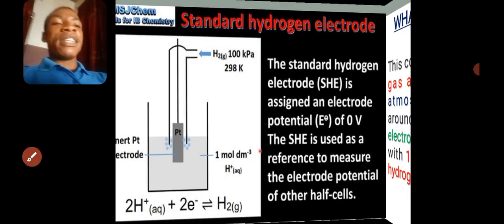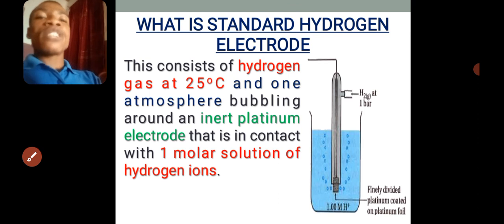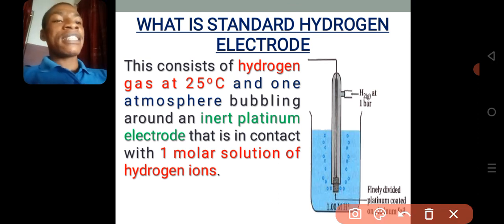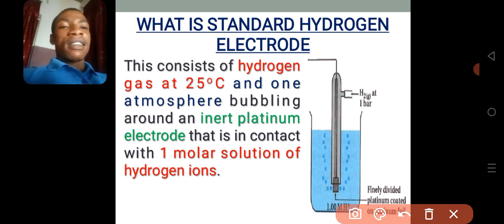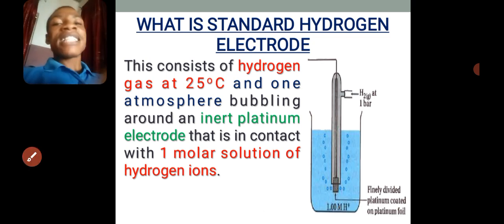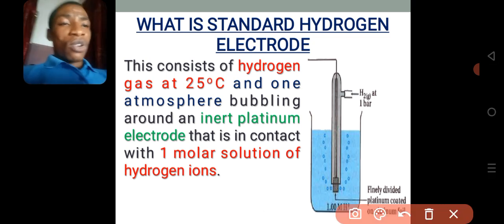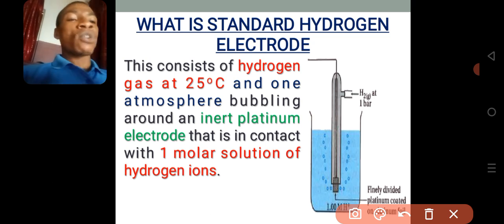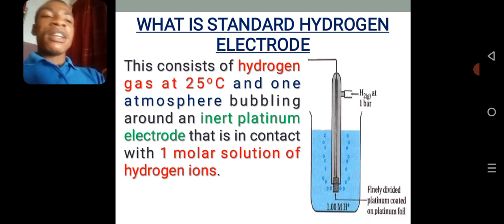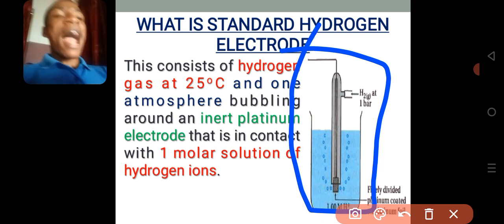The platinum electrode is then made to touch a solution of hydrogen ions — H⁺ solution — at one mole per dm³. So as the inert electrode touches the hydrogen ion solution, which is in contact with hydrogen gas, what you have is called a standard hydrogen electrode. It consists of hydrogen gas at 25 degrees Celsius and one atmosphere, bubbling around a platinum wire that is in contact with a one molar solution of hydrogen ions.